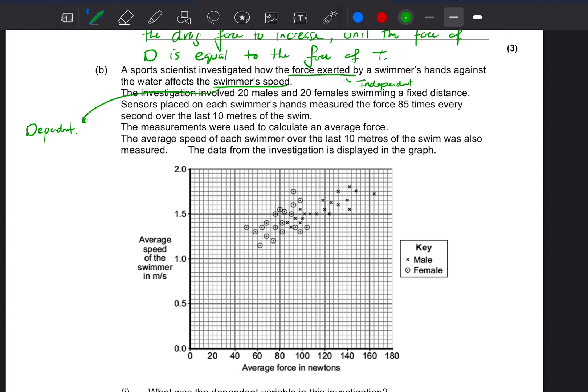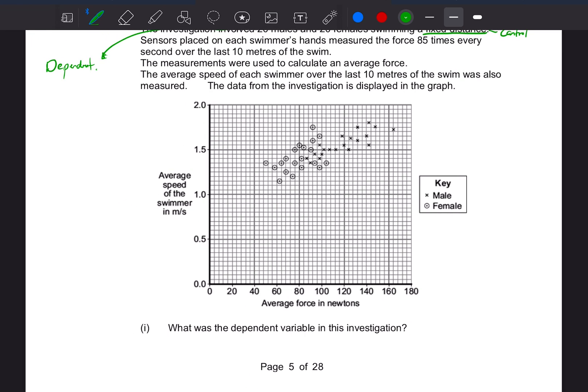The investigation involved 20 males and 20 females swimming a fixed distance. So fixed distance, that is a control variable. It says sensors placed on each swimmer's hand measured the force 85 times a second over the last 10 meters of the swim. Again, both control variables. The measurements were used to calculate an average. All right, so we've got 85 measurements in order to calculate an average. So that's a very reliable measurement. You know, in science we normally say take at least three readings, so they've taken 85, so they've gone over and above. The measurements were used to calculate an average force. The average speed of each swimmer over the last 10 meters of the swim was also measured. The data from the investigation is displayed on the graph. Okay, so we can see that the males are the crosses and the females are the dots with the circle around them.